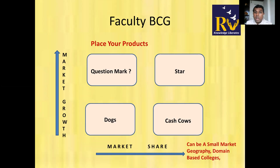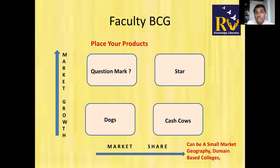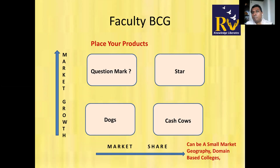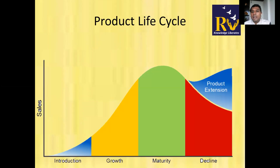Your market need not be the entire MBA education industry — it can be as small as your own college, or a geography, or a segment. Place your products even in the product life cycle matrix; it gives you a clearer acceptance of reality. Once you know which quadrant a product is in, you know where to direct efforts for better returns. I will now share my own product life cycle as a guideline.